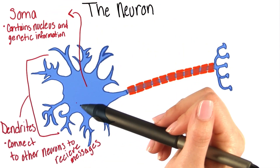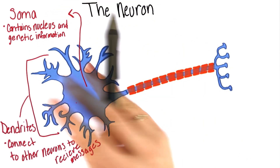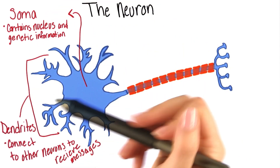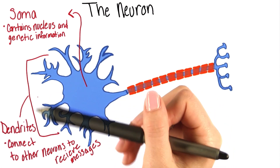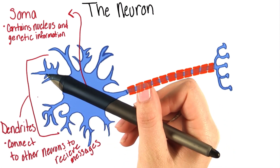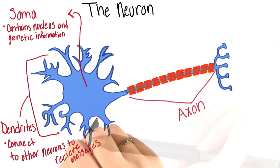These are the dendrites. They're finger-like branches that project from the soma to connect to other neurons and receive messages.